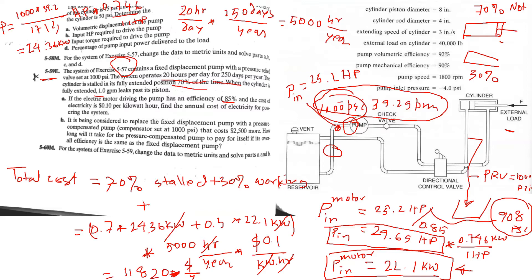Moving to part B: redesign the system using a variable displacement pump instead of the fixed displacement pump. A fixed displacement pump always produces 39.2 gallons per minute. A variable displacement pump allows you to change the flow rate. When flow is reduced, power is also reduced because power equals pressure times flow divided by the constant 1,714. When the cylinder is stalled, we only need one gallon per minute — just enough to replace the cylinder leakage at high pressure.